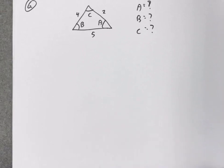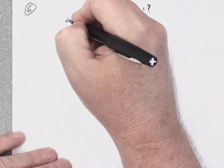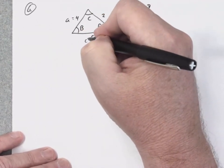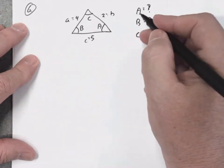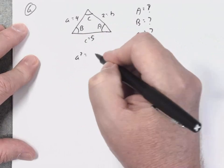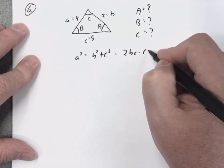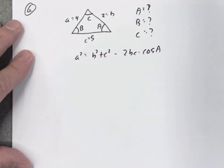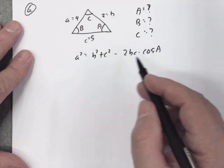For the last problem, problem six, they give you another triangle with all three sides: side a opposite angle A, side c, and side b. Whenever you're given three sides of a triangle, you must use the law of cosines to start finding the angles. We'll find angle A first, using the formula a squared equals b squared plus c squared minus two bc cosine A.